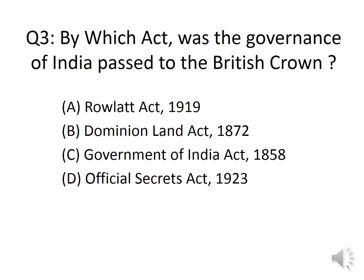Question 3: By which Act was the Governance of India passed to the British Crown? Options: A. Rowlatt Act 1919, B. Dominion Land Act 1872, C. The Government of India Act 1858, D. Official Secrets Act 1923. The answer is Option C, the Government of India Act 1858. This is the impact of the revolt that occurred in 1857.